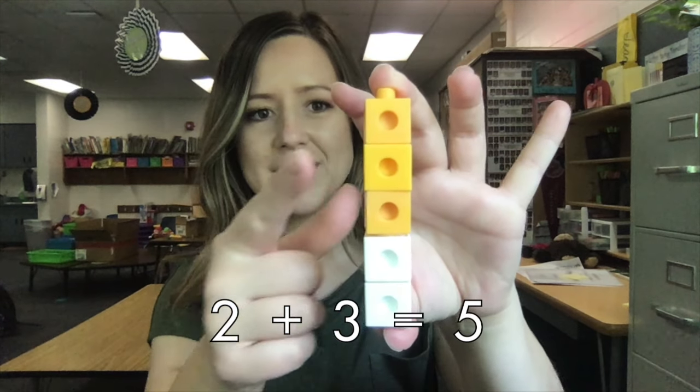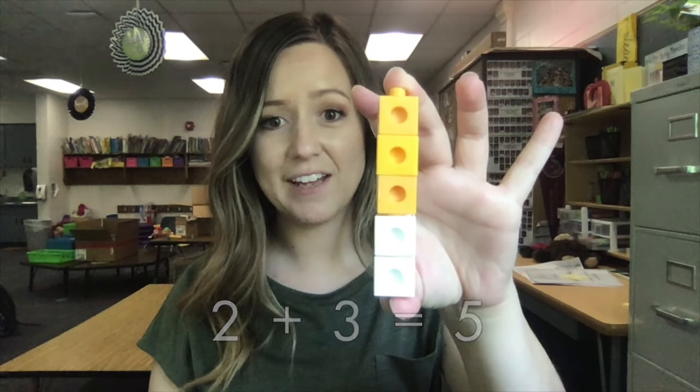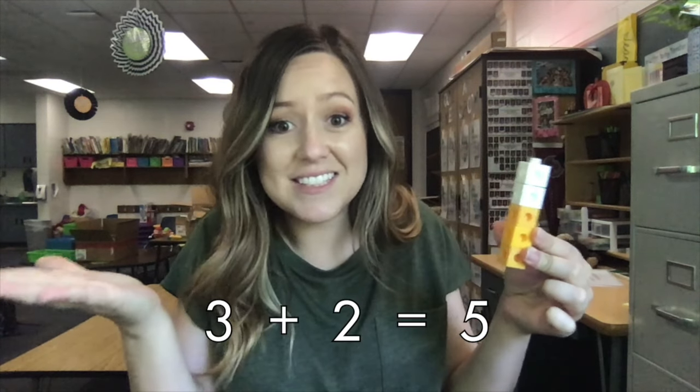Two plus three equals five. But guess what, I can build it the other way too. Three plus two is still five. It doesn't matter how I build the tower. If I'm using the same numbers, the sum or total will be the same.